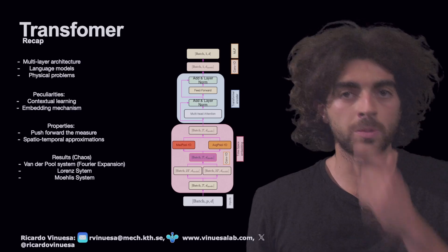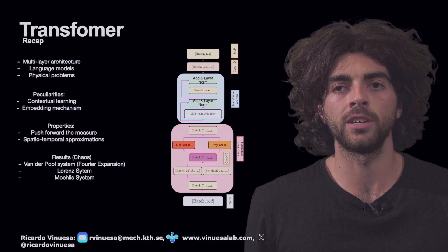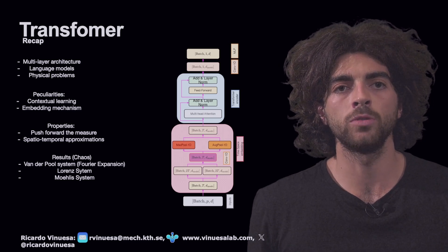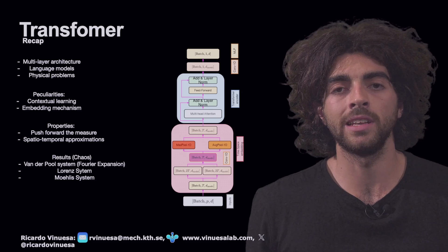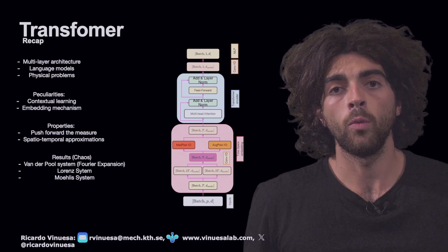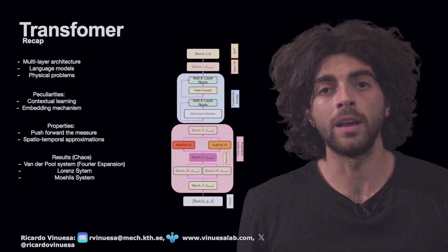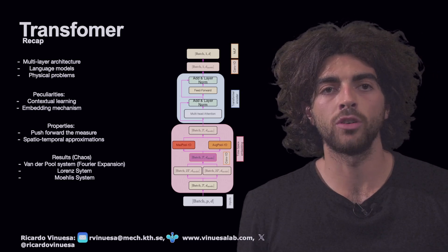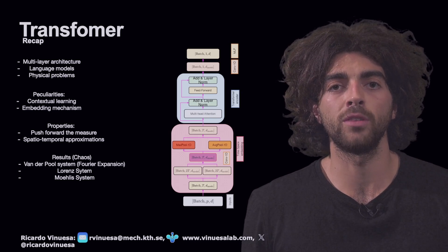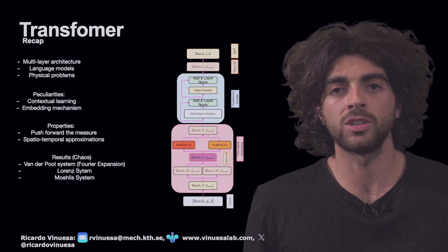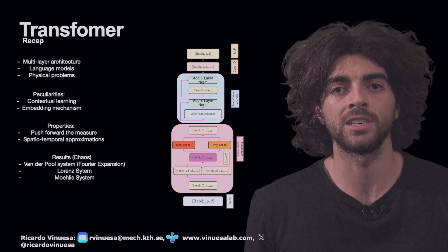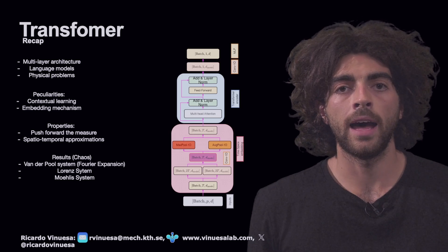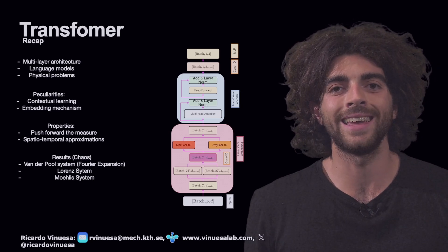Fundamentally, in the first video we specified the nature of the transformer. It's a multi-layer architecture originally thought for language translation or text processing. However, in the past year it has been recently used for physical problems, and novelties when studying really complex systems are common in state-of-the-art models nowadays. One of the main peculiarities, as we mentioned, is the contextual learning capability of the transformer due to the attention mechanism. We also mentioned other attention mechanisms such as the E-attention, and the other peculiarity of this model is the embedding.